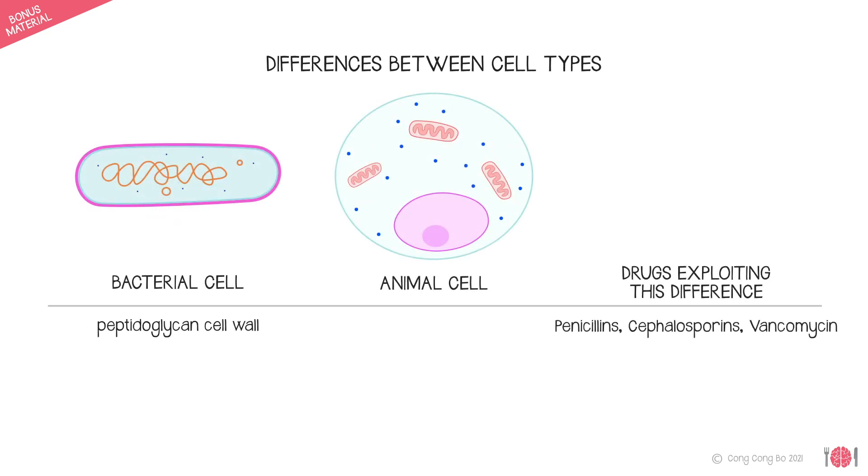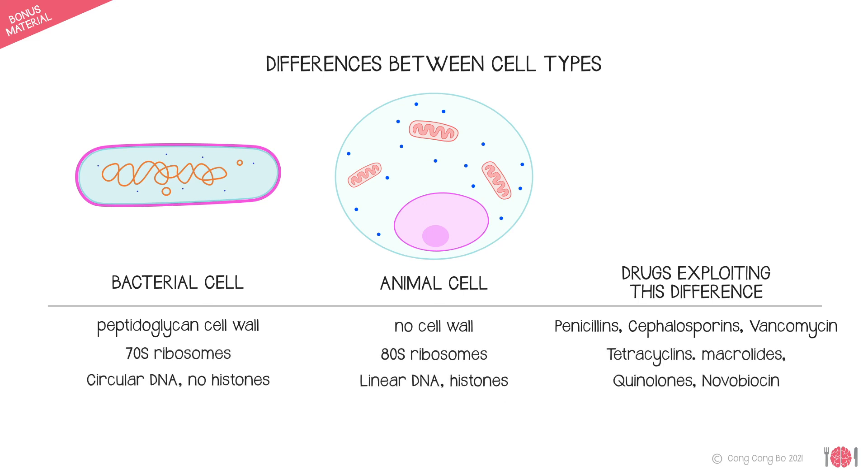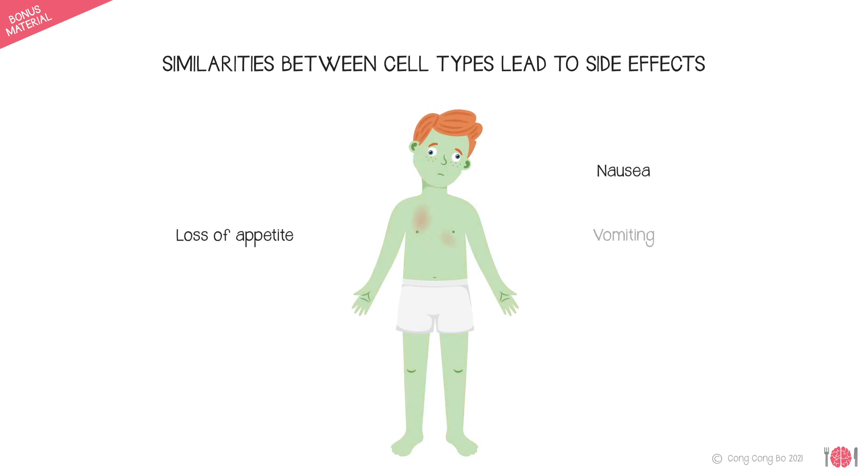Some work by disrupting bacterial cell walls, which are absent from animal cells, while others prevent protein synthesis in bacterial cells, but not animal cells. Sometimes there are structural similarities and we experience side effects when we take antibiotics.